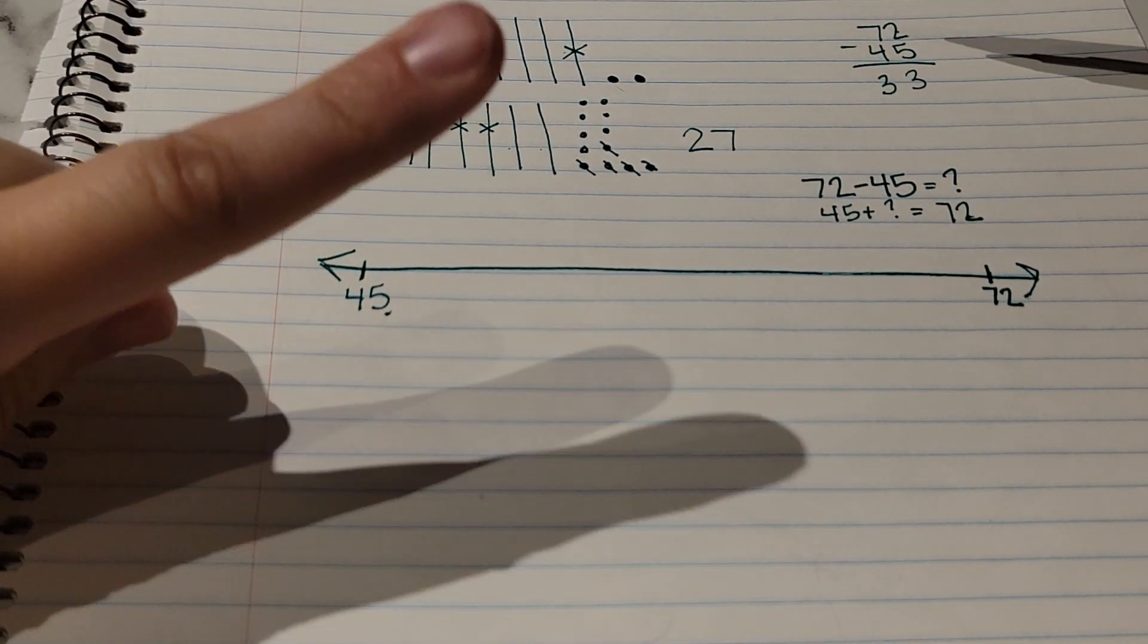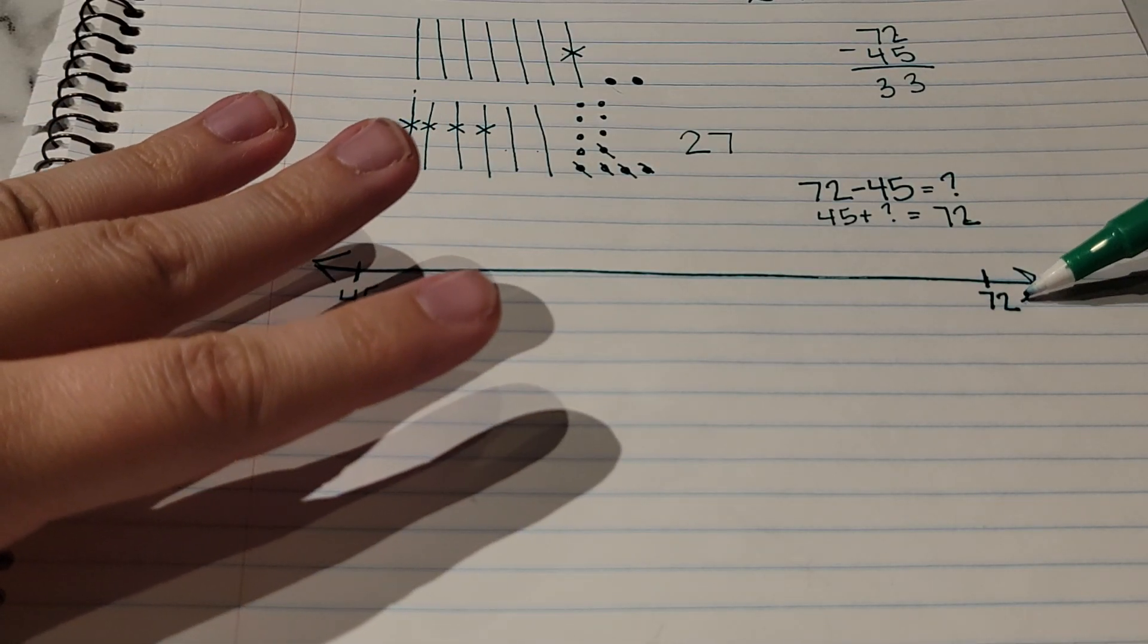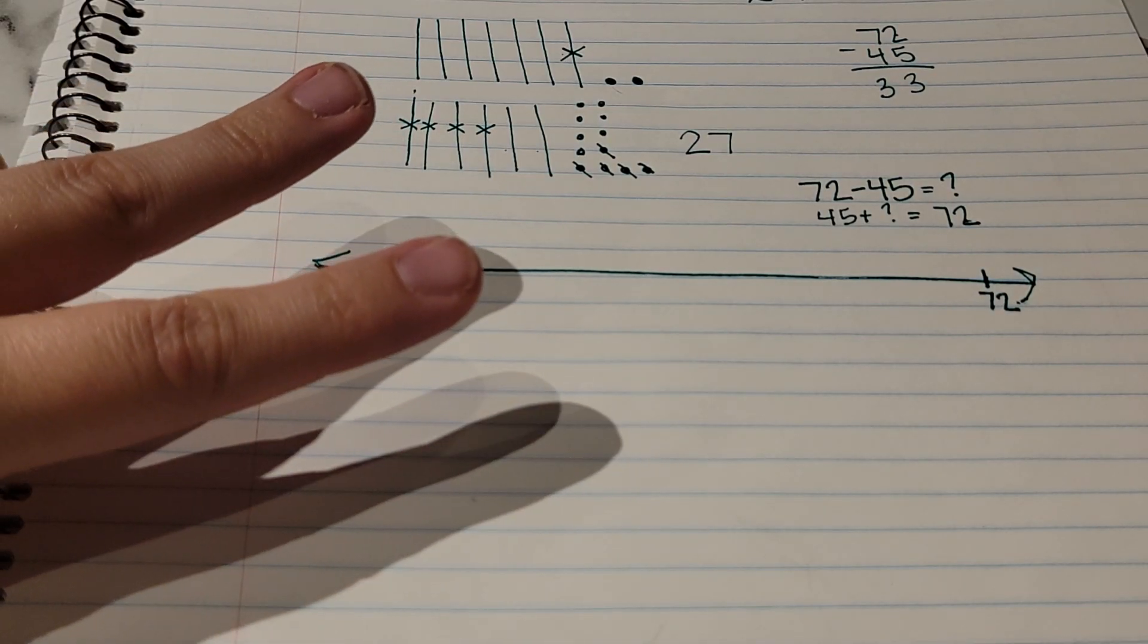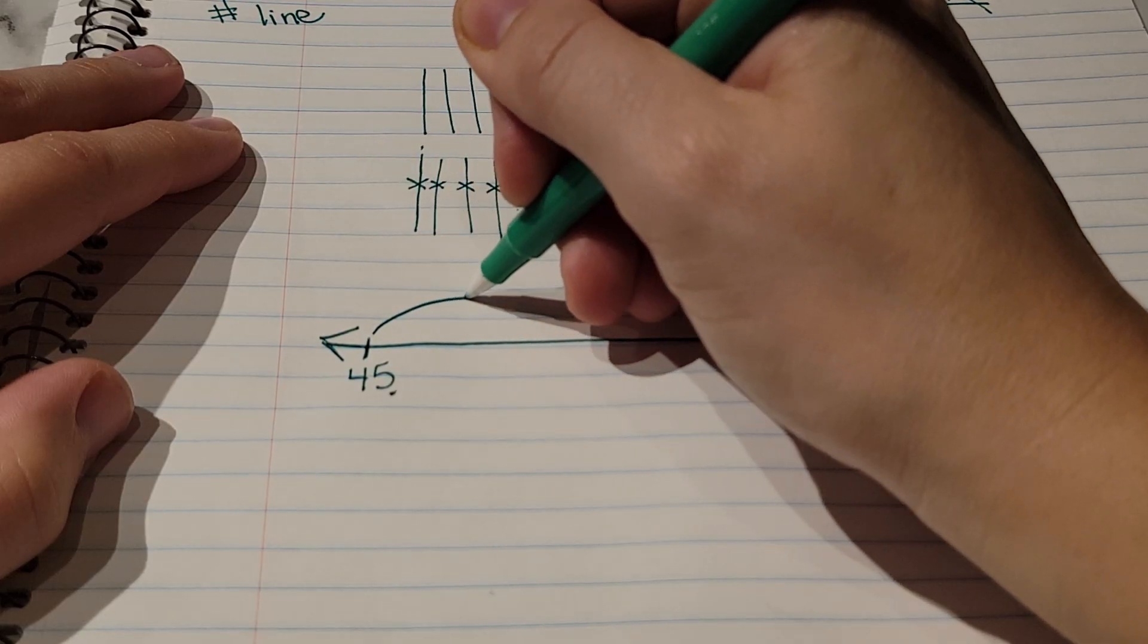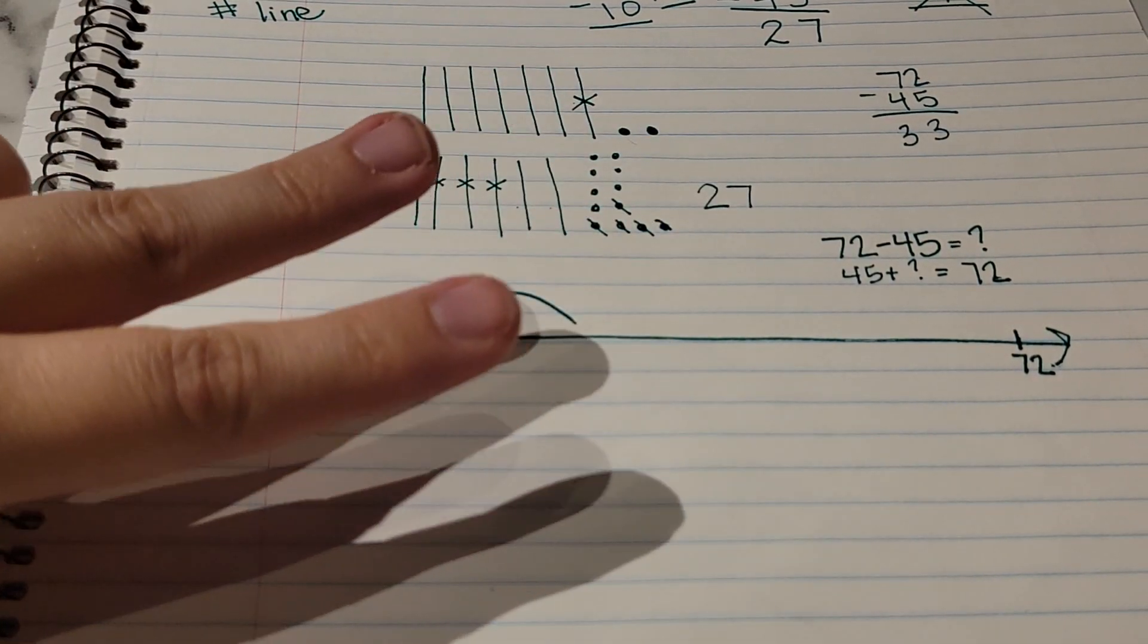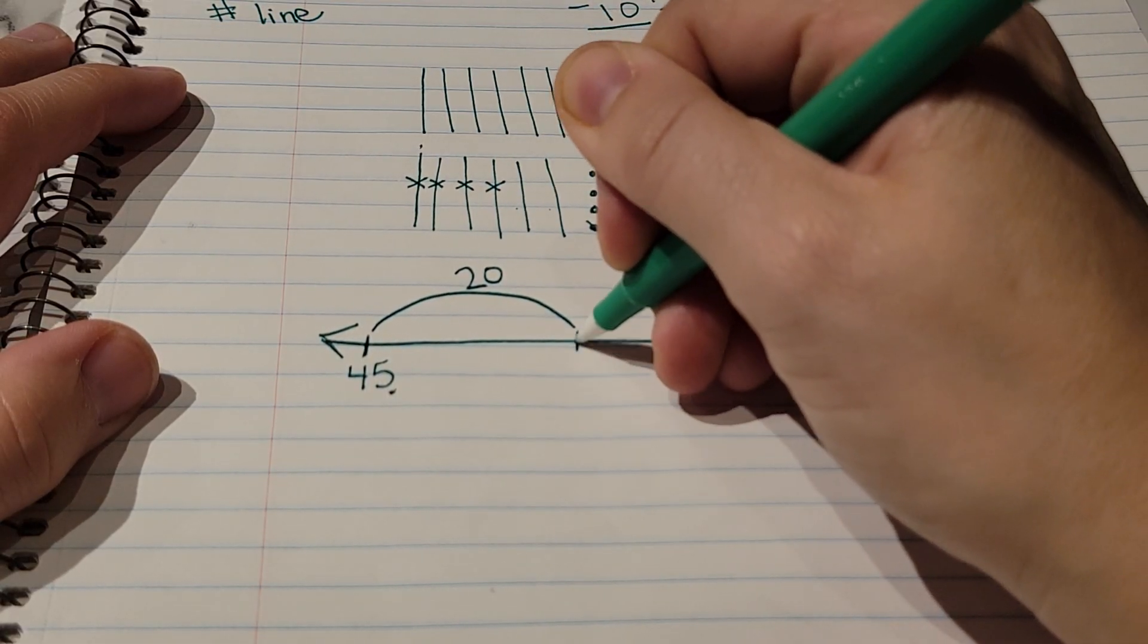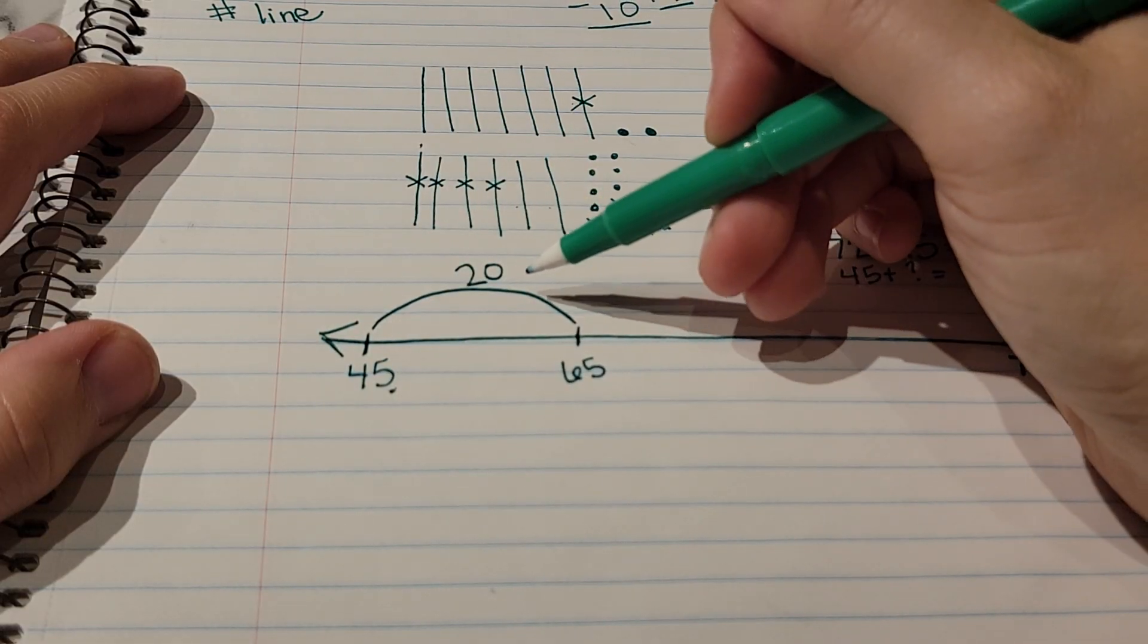And then we're going to skip count, but we cannot go past 72. So: 45, 55, 65, and then I can't do 75 because that's too much. So I can only do two jumps of 10, so I'm going to make my hop.